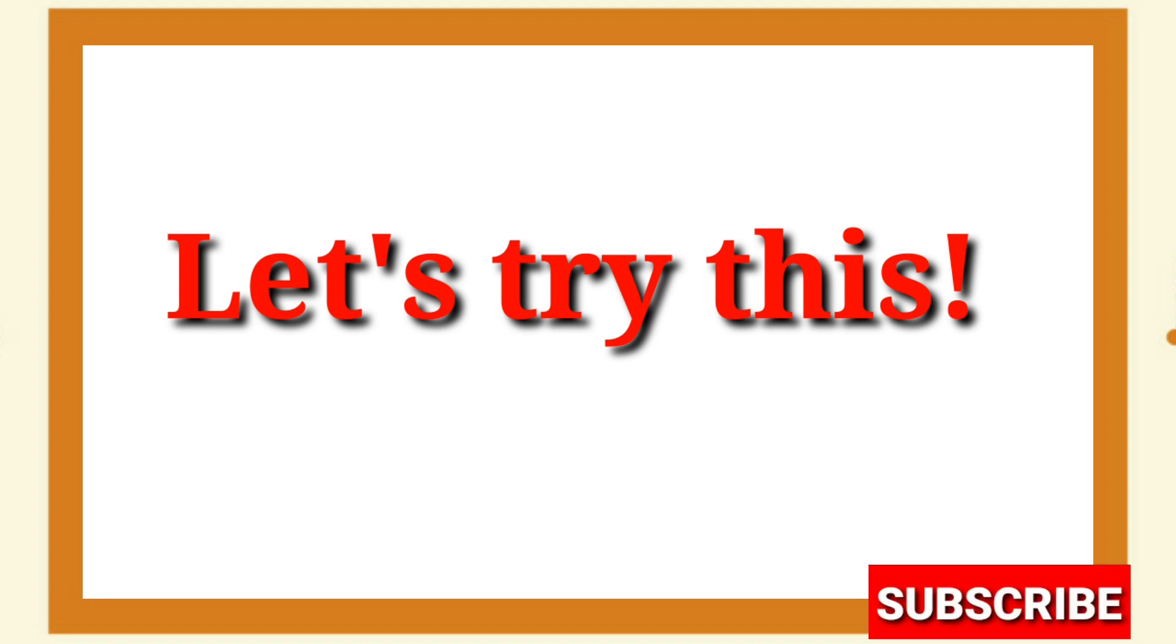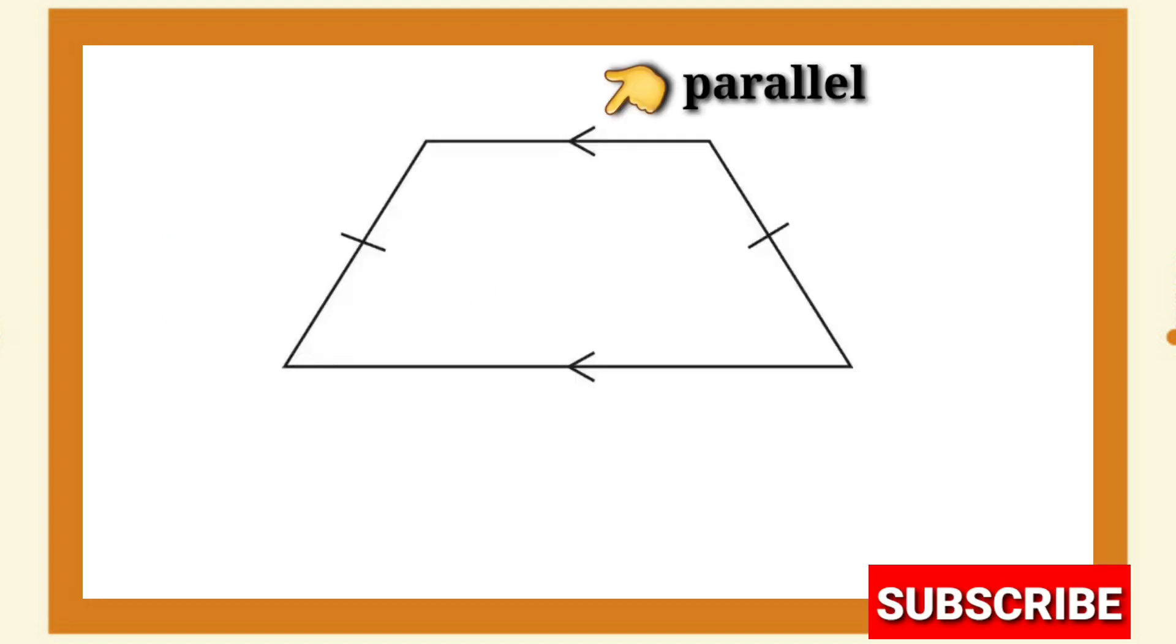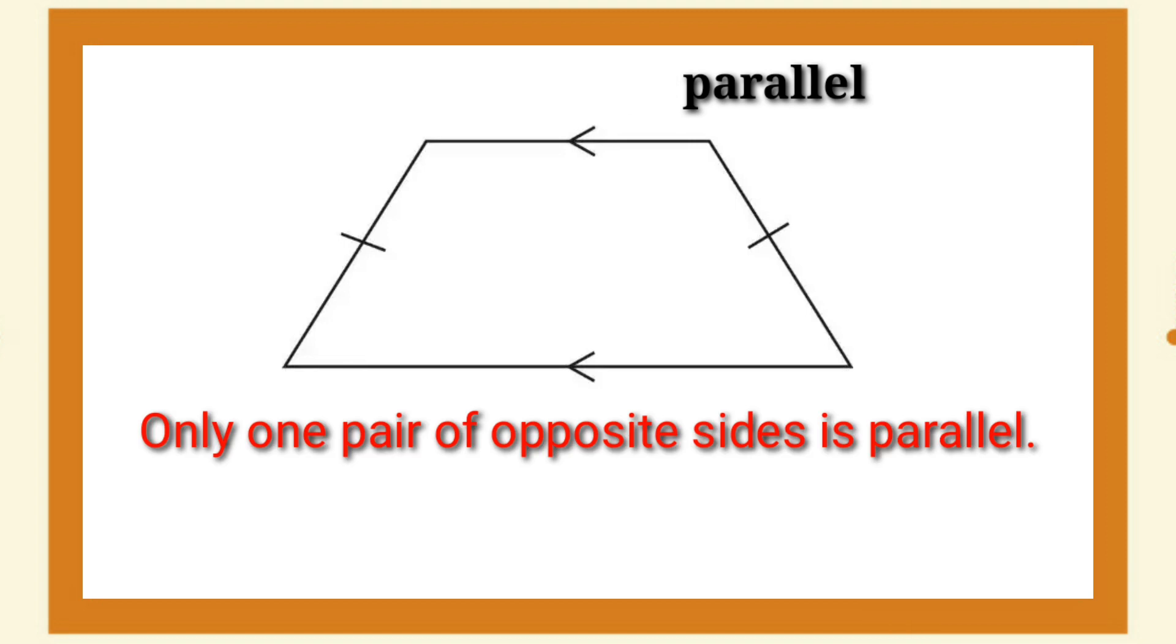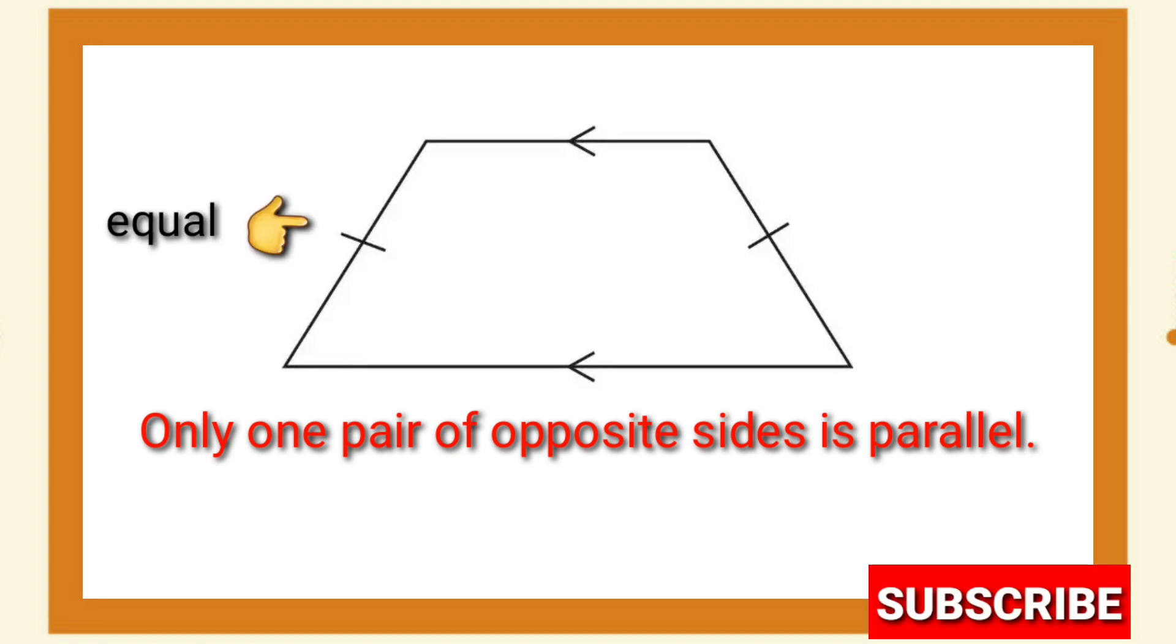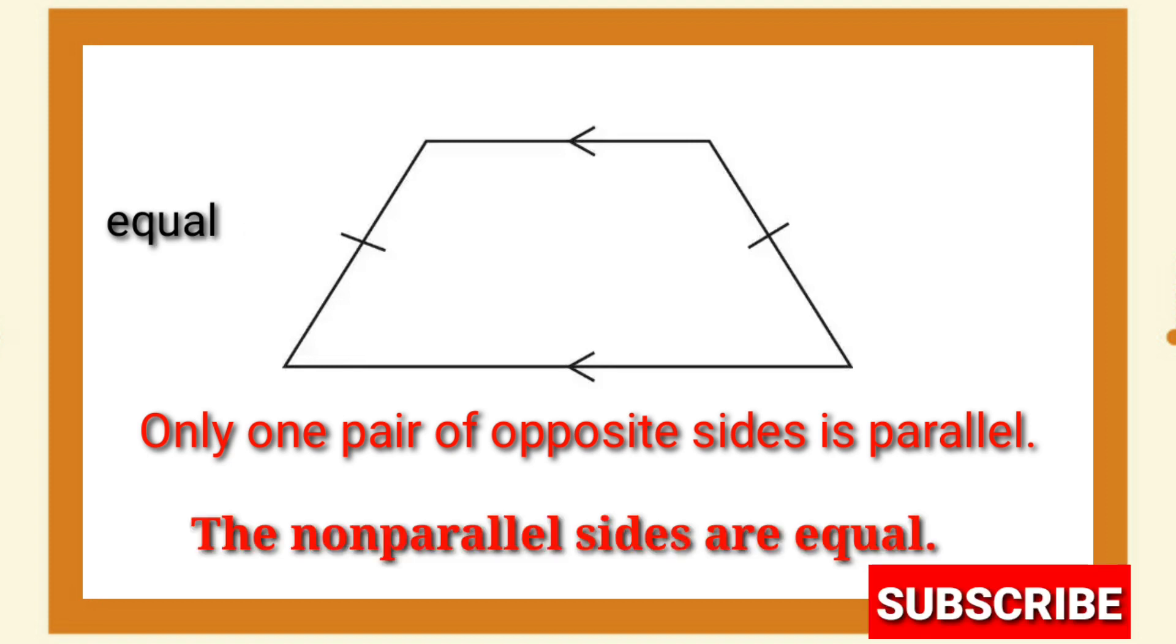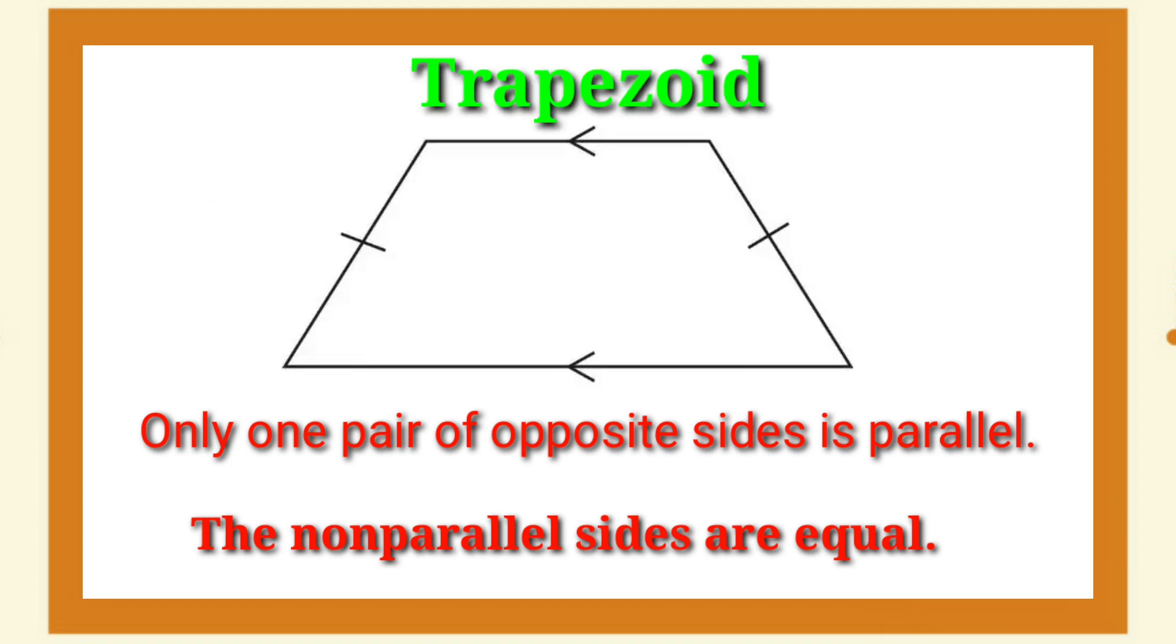Let's try this. Only one pair of opposite sides is parallel. The non-parallel sides are equal. It's a trapezoid.